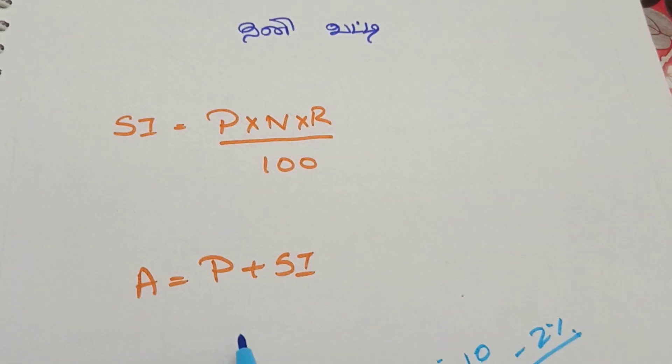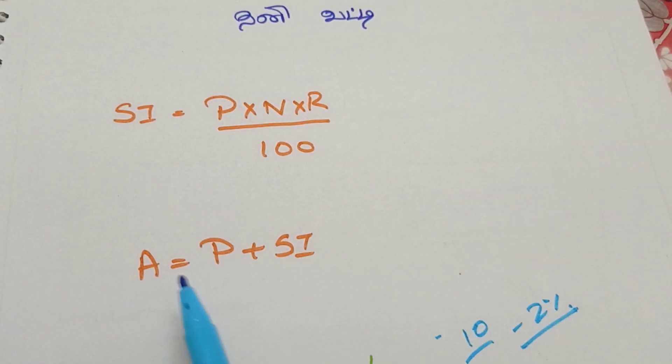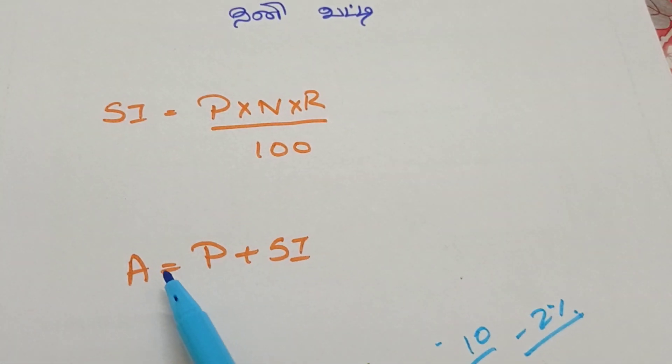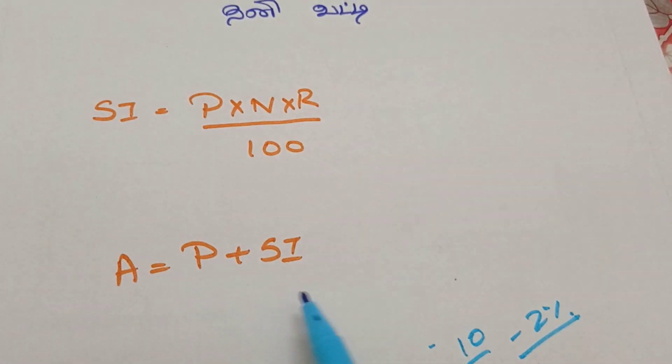A equals P plus SI. A equals the amount. This is the result of adding the principal and the interest.